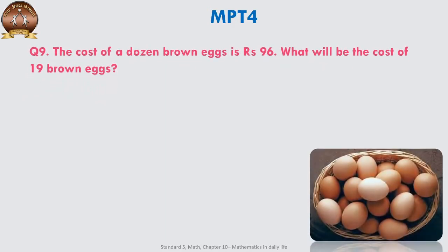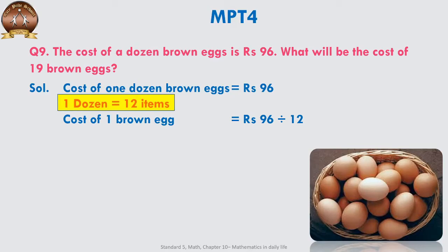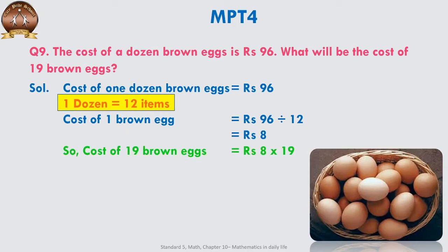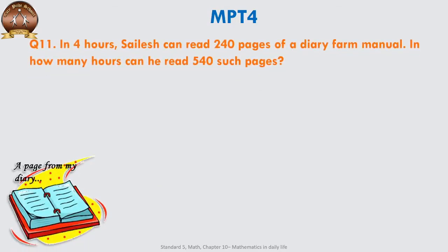Another question based on eggs: the cost of one dozen brown eggs is ₹96. What is a dozen? As we learned in the previous video, a dozen is 12. What will be the cost of 19 brown eggs? Cost of one dozen eggs = ₹96, and one dozen = 12 items. So cost of one brown egg = ₹96 ÷ 12 = ₹8. Cost of 19 brown eggs = 8 × 19 = ₹152. Thus, cost of 19 brown eggs would be ₹152.